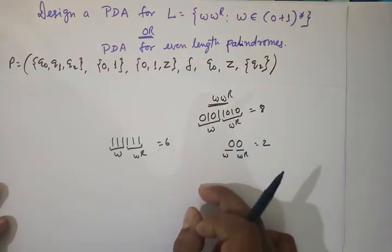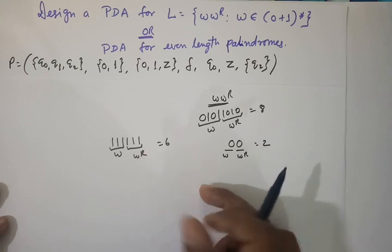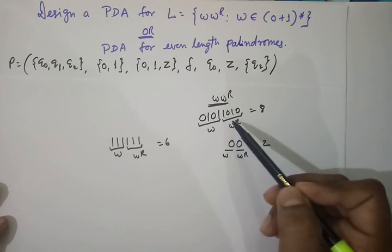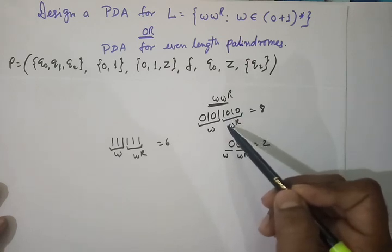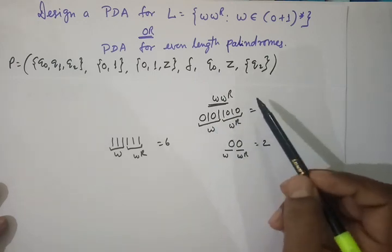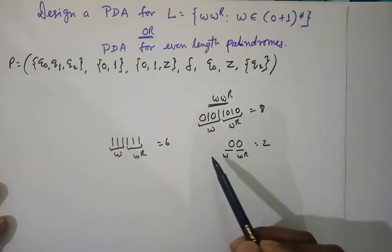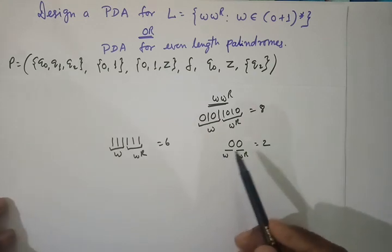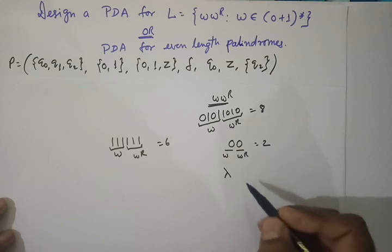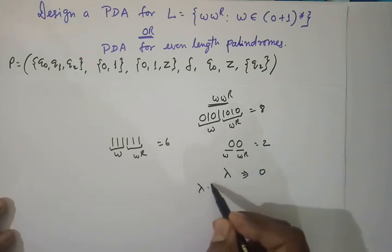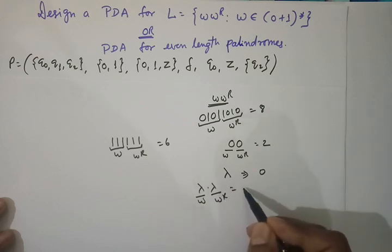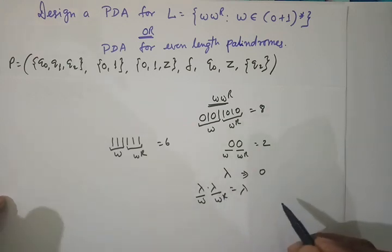So our PDA will accept all strings over 0 and 1 which are palindromes, but the condition is the length should be even — that's why we call them even-length palindromes. One important thing: null should also be accepted, where the length is 0. Null is our W part and null is our WR part, so it should be accepted.